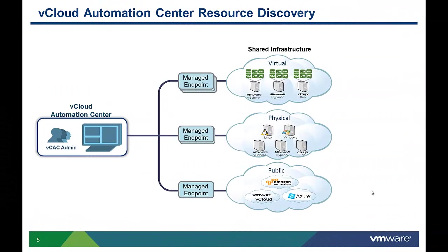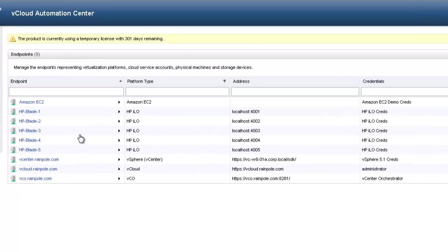vCloud Automation Center discovers and manages the underlying compute fabric through the device manager that manages those resources. To communicate with these device managers, the administrator defines a managed endpoint for each virtual, physical, or public cloud device manager. Our demo administrator has already configured managed endpoints for a number of physical servers, Amazon and VMware vClouds, and vSphere.